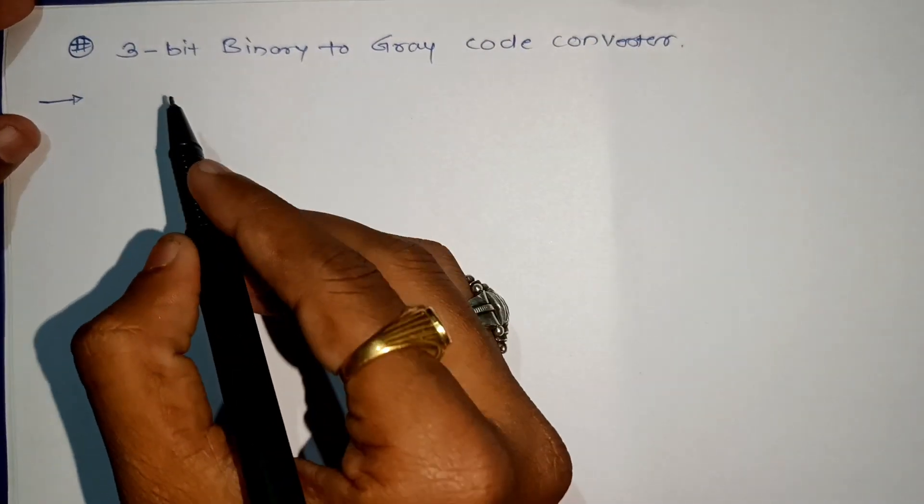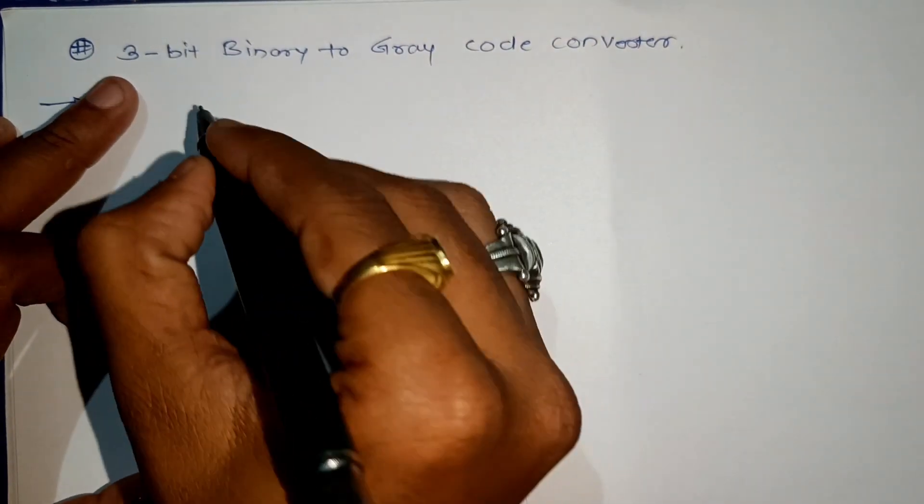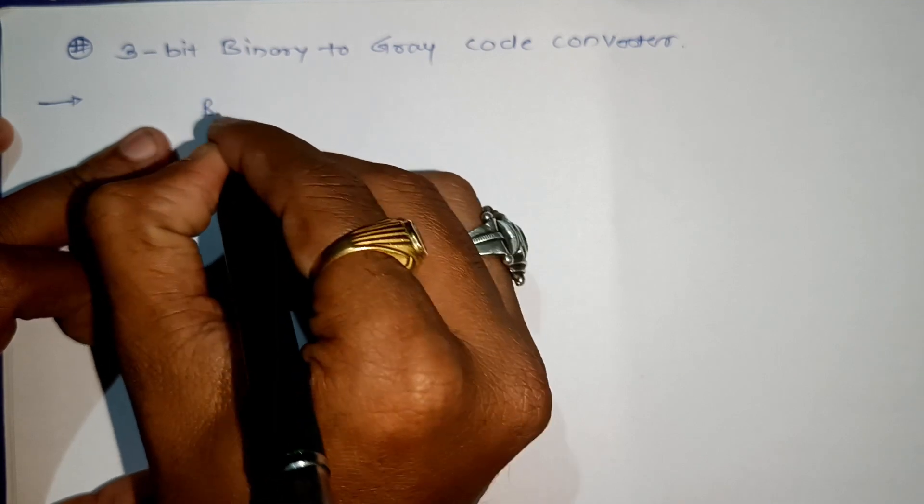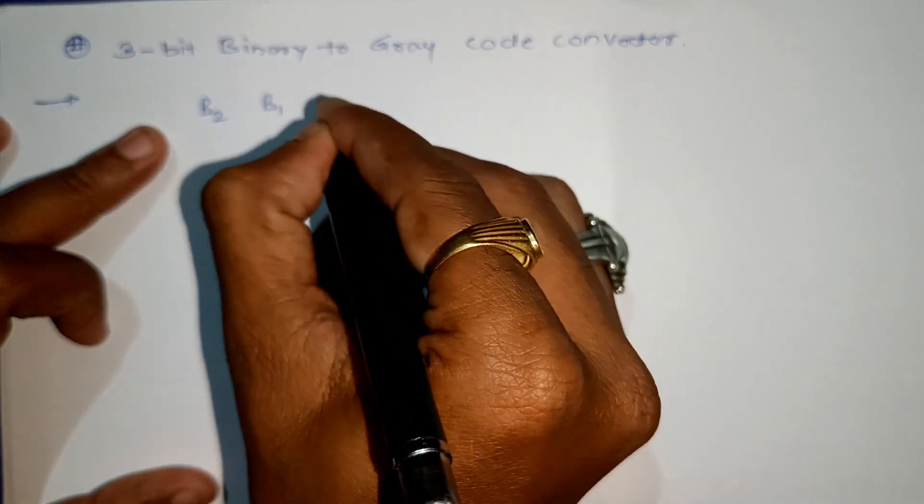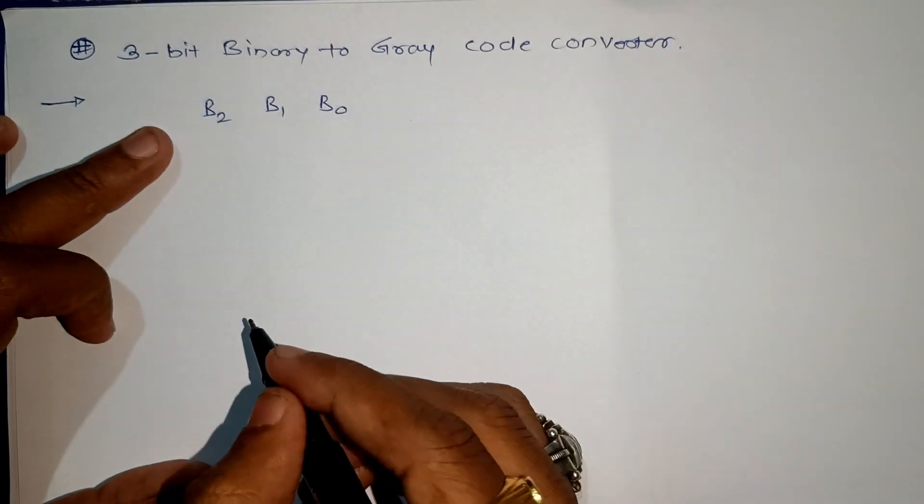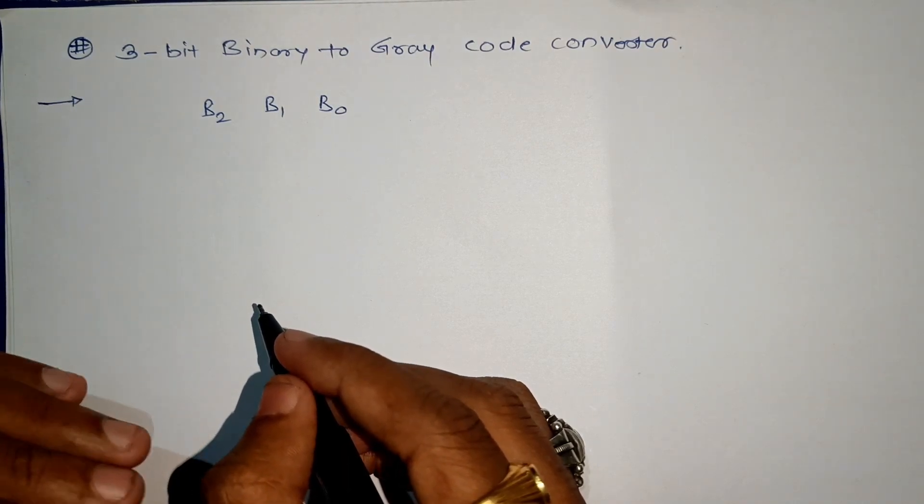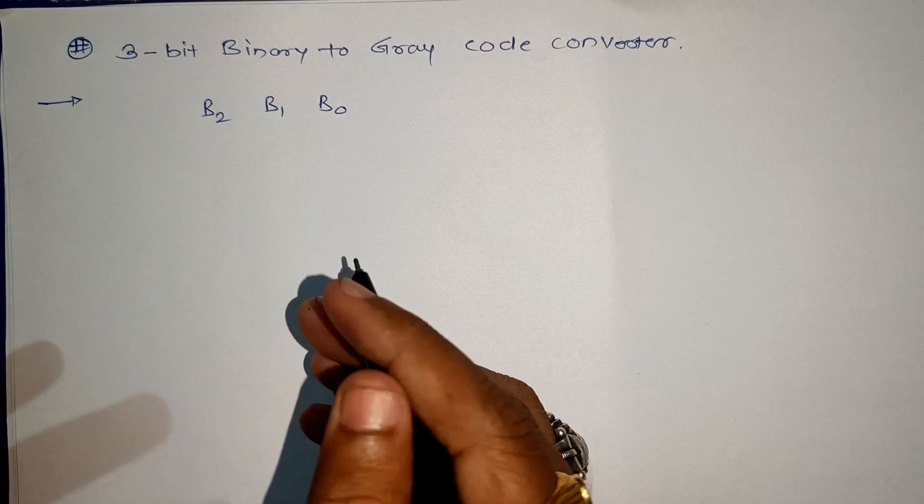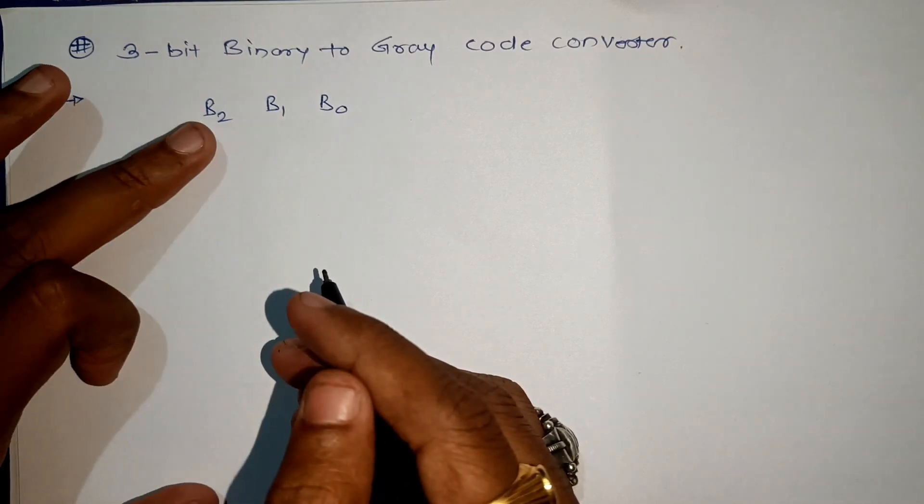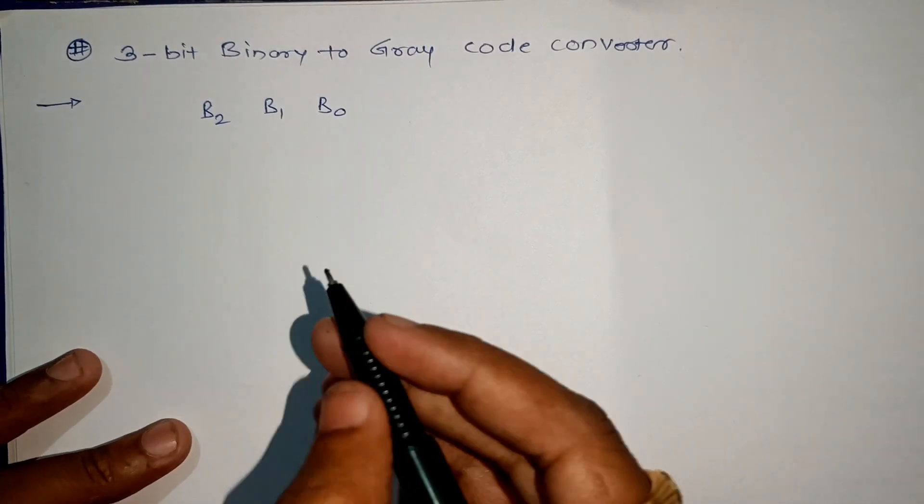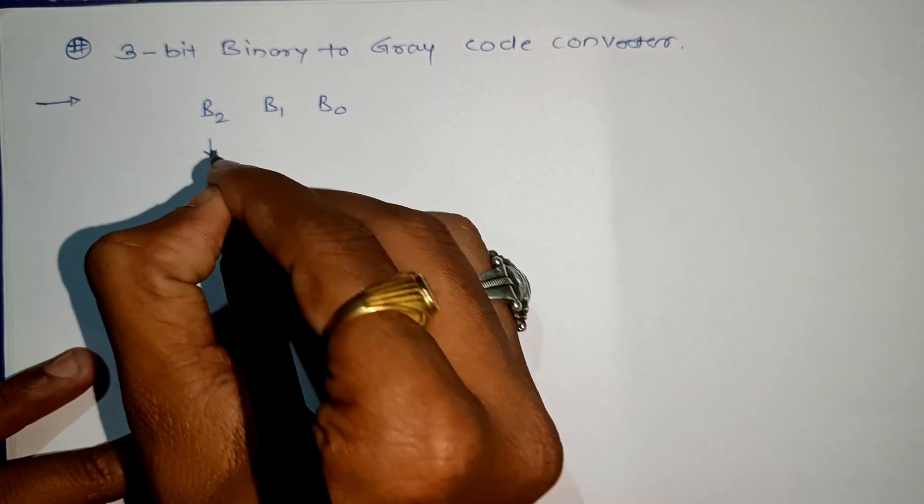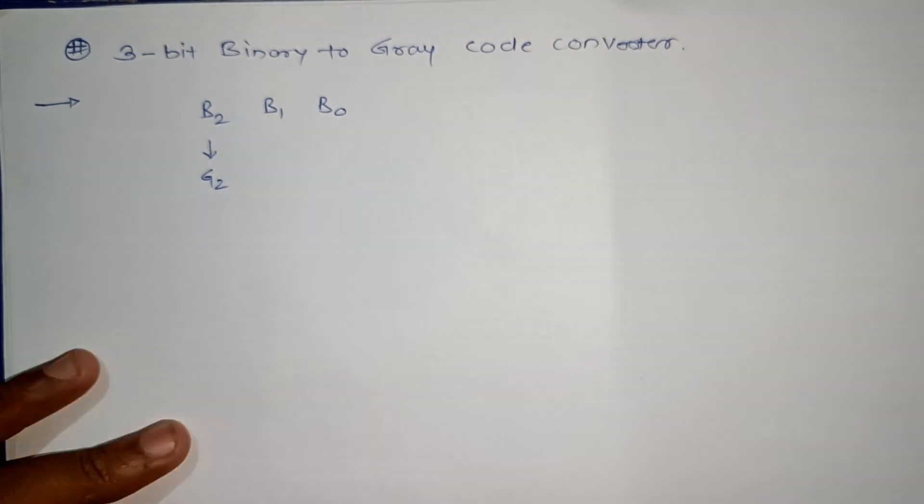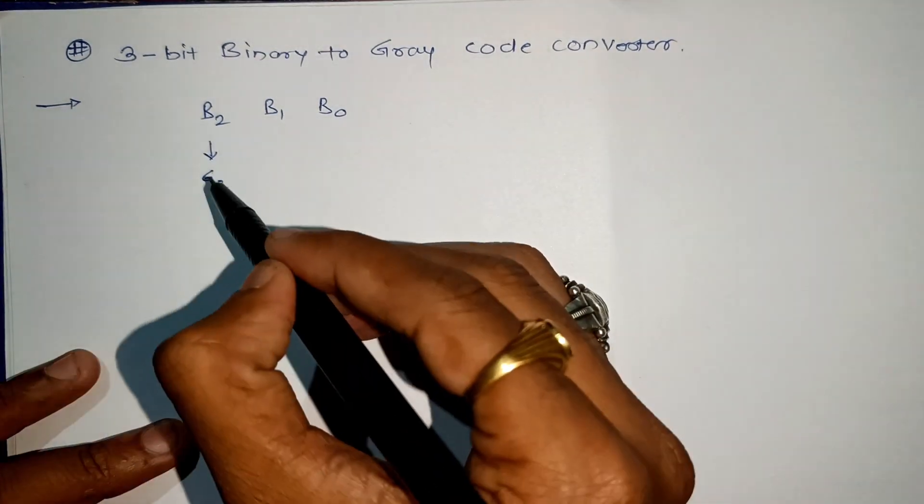Let us assume that we have a 3-bit binary number as B2, B1, and B0, and we have to convert this into another 3-bit gray code converter. The process is quite simple: whatever the MSB bit is, take it as the gray code. That means B2 will be equal to G2.